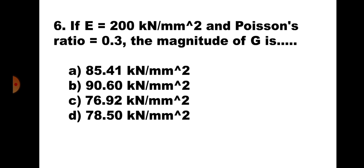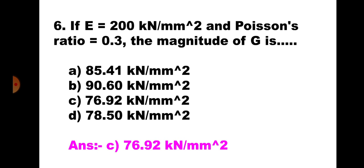Question number 6. If E = 200 kN/mm² and Poisson's ratio μ = 0.3, the magnitude of G is: A. 85.41 kN/mm², B. 90.60 kN/mm², C. 76.92 kN/mm², D. 78.50 kN/mm². Using the relation E = 2G(1 + μ) and substituting the values, G comes out to be 76.92 kN/mm². Hence, the correct answer is C: 76.92 kN/mm².